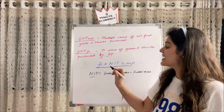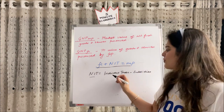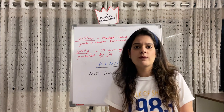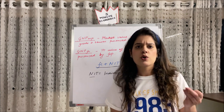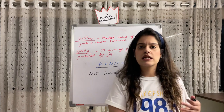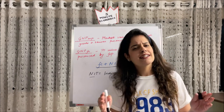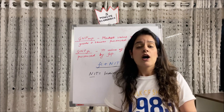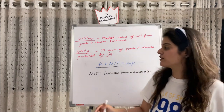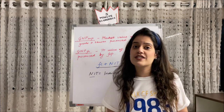NIT stands for Net Indirect Taxes, which equals indirect taxes minus subsidies. Taxes are always higher, so IT minus subsidies gives us NIT. For example, a bottle of water is produced at a factor cost of 50 rupees — the cost of plastic and labour. But when it comes to the market, it is priced at 70 rupees. That market price is MP, and the 20 rupees difference is our NIT. So 50 + 20 = 70. That is the difference between FC and MP.